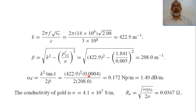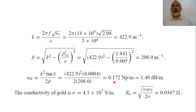The attenuation coefficient due to dielectric loss, alpha_d, is 0.172 Np/m. Multiplying by 8.686 to convert to dB gives 1.49 dB/m.